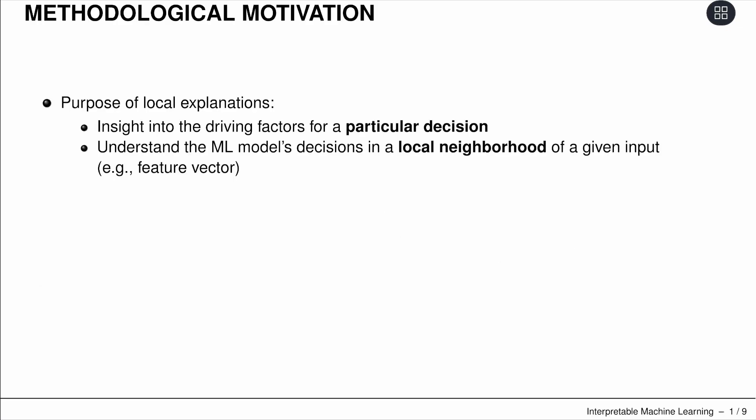First, let's talk about the motivation of the method itself. What's the purpose of having local explanations? Some people use machine learning for making very particular decisions — maybe particular decisions about you, whether you get an increase in your salary, whether you get a loan, the next job, the next apartment. And you would like to get insights into the driving factors — what was actually important for that one particular decision.